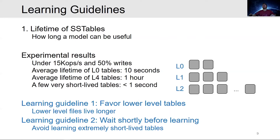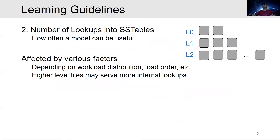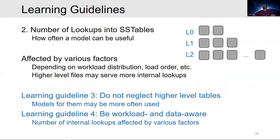This leads us to the first two learning guidelines. First, favor learning tables at lower levels, since they live longer and models for them are valid for a longer time. Second, wait shortly before learning to avoid learning extremely short-lived tables. The number of lookups is more interesting; it is affected by various factors such as workload distribution and load order. There are situations where higher-level tables serve more internal lookups despite their shorter lifetime. Learning Guideline 3: do not neglect higher-level tables. Learning Guideline 4: be workload and data aware, as various factors can change the number of lookups into tables. The system must dynamically collect relevant data to decide whether to learn a table or not.